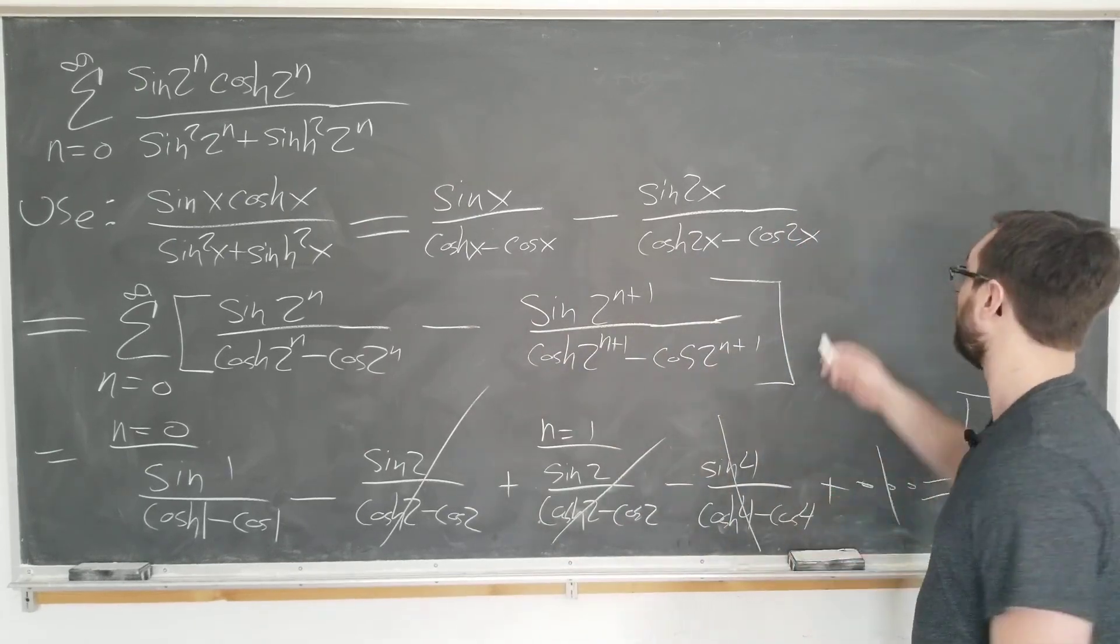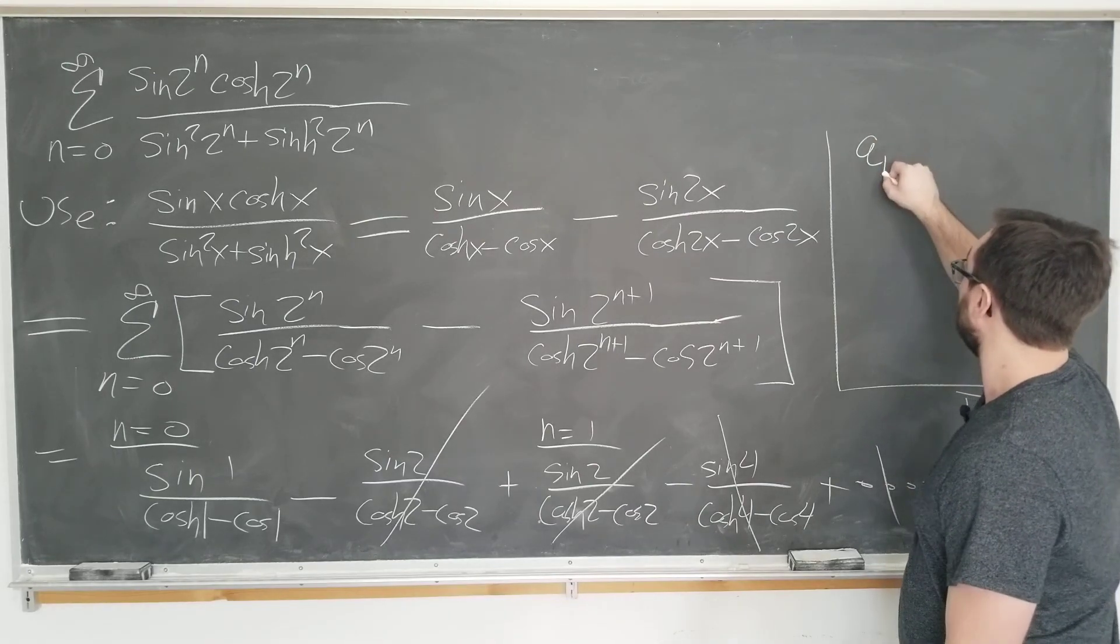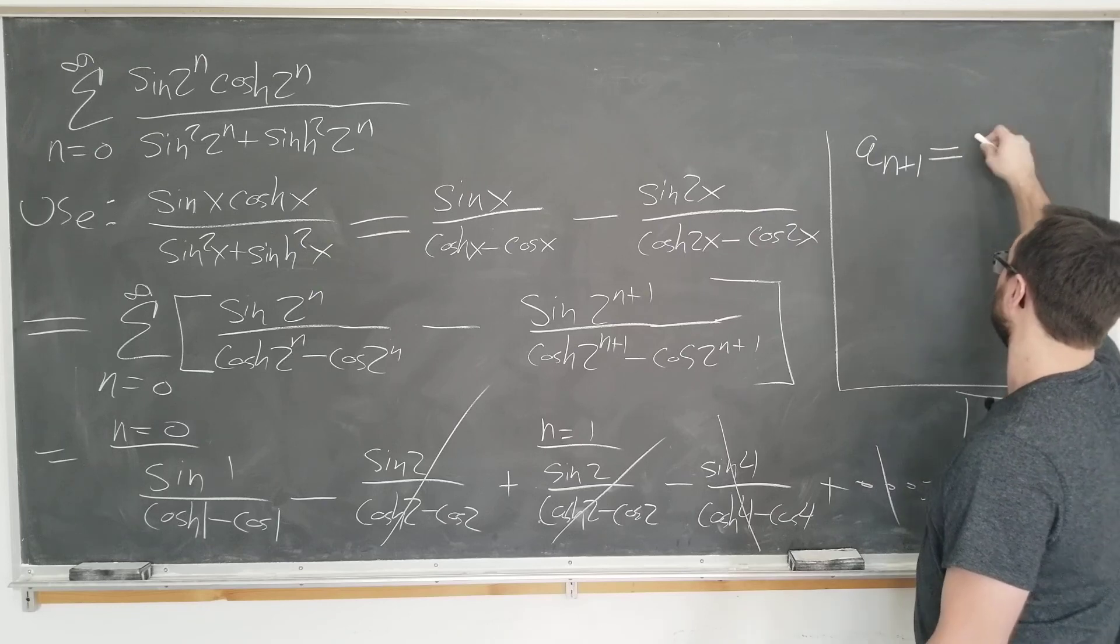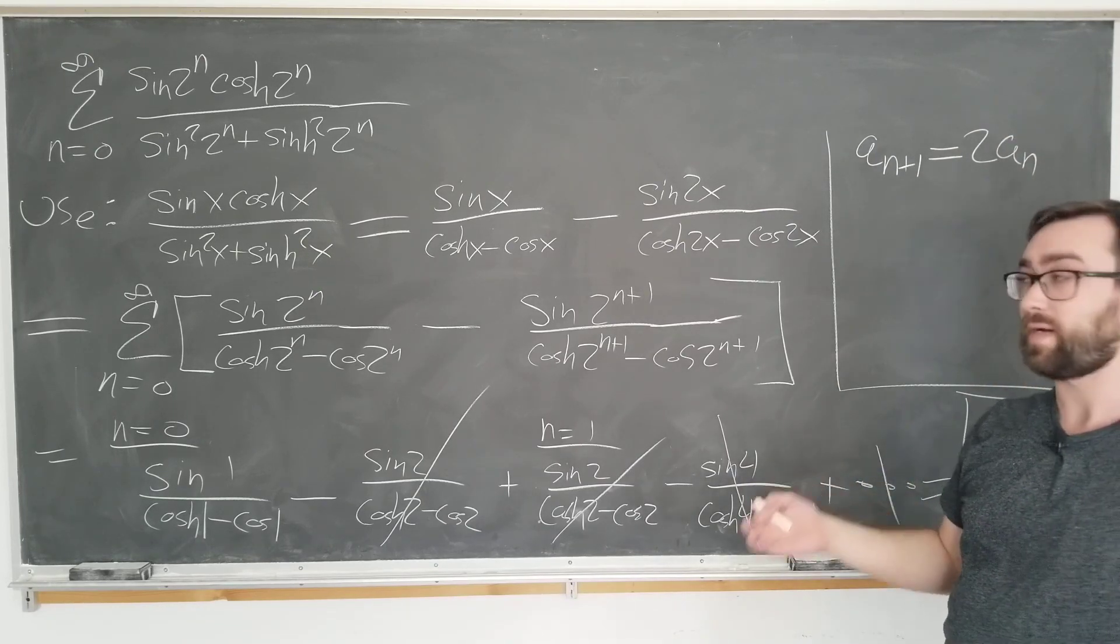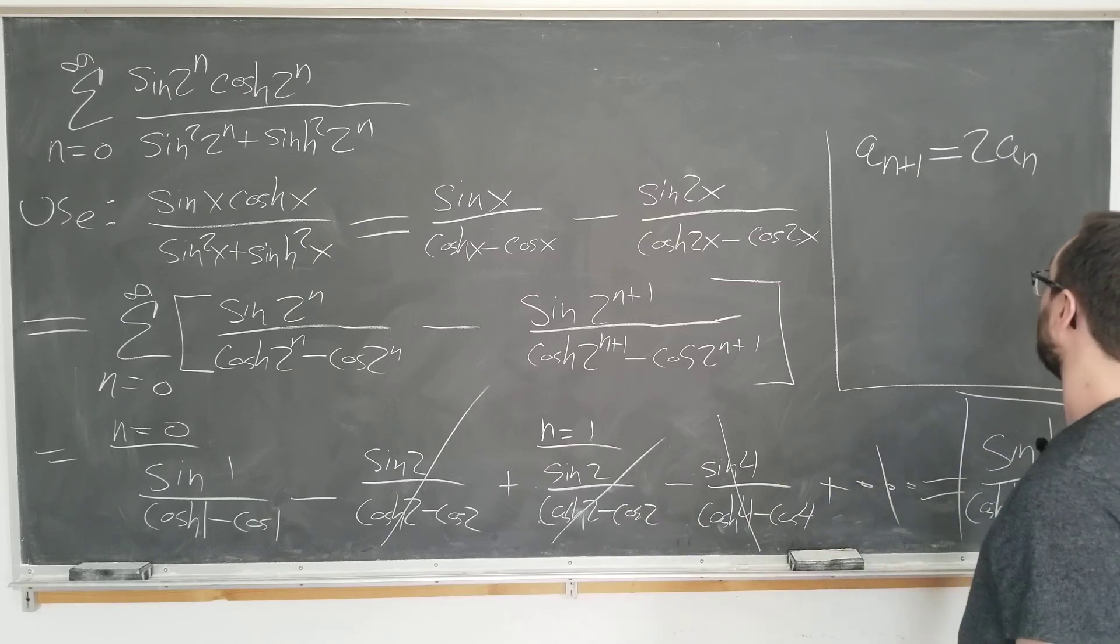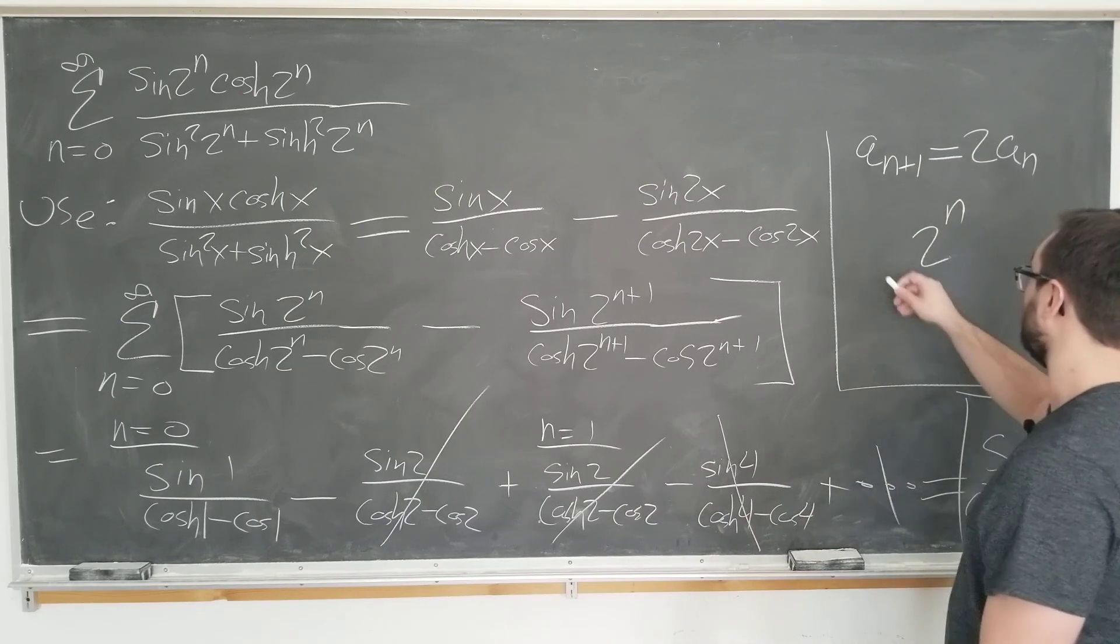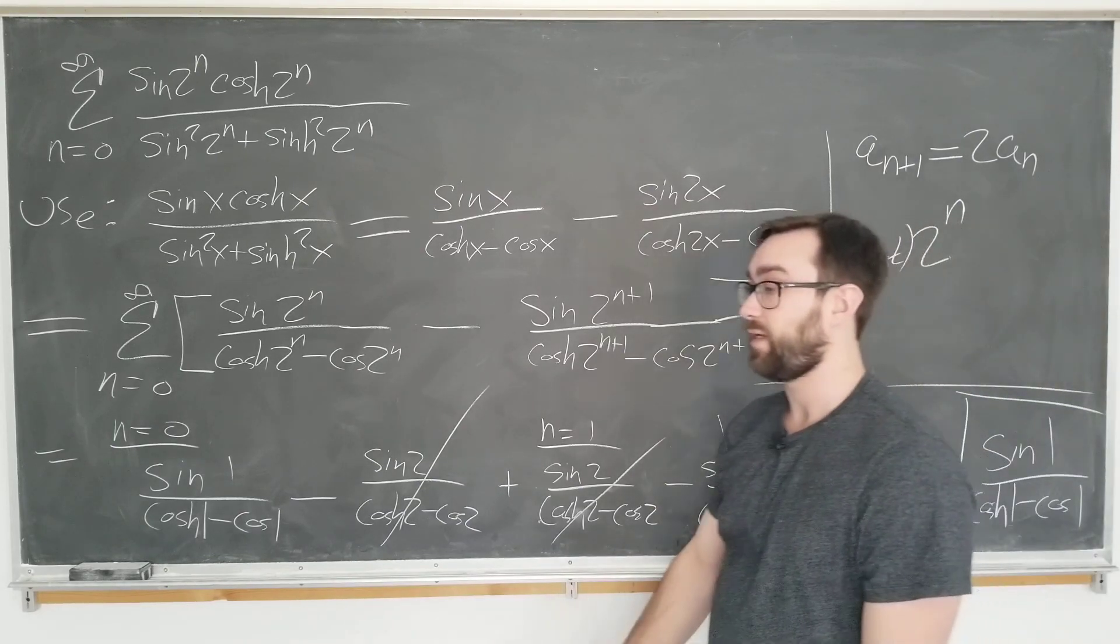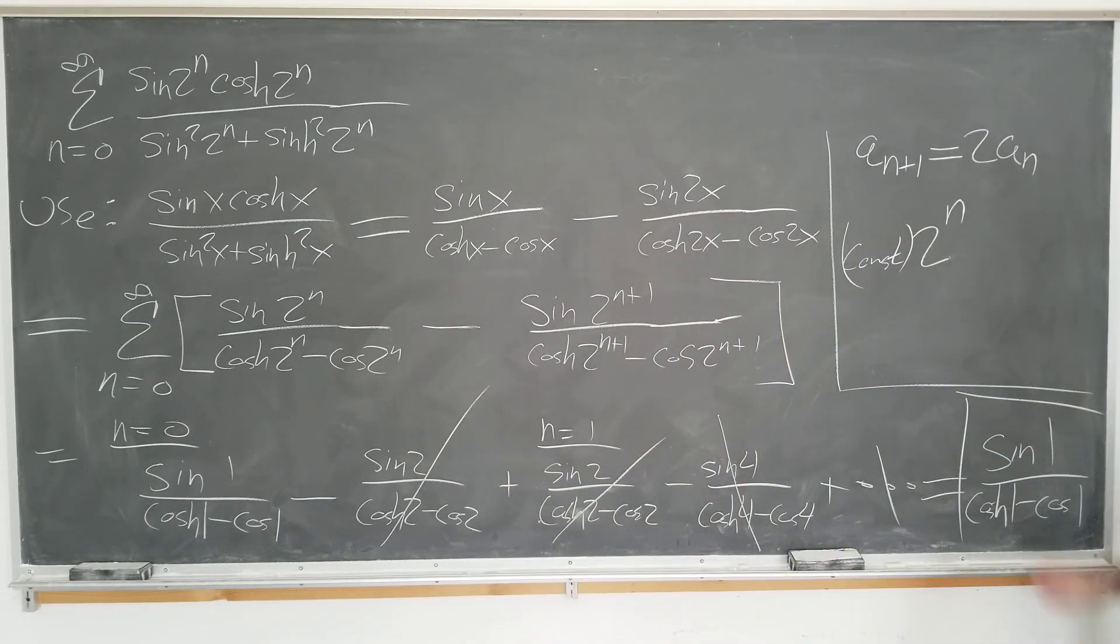So let's see why the 2 to the n sequence was important. Well, if we wanted to telescope like it did here, we would need a sequence satisfying a_n+1 is equal to 2a_n. That's the only way that this will work. Well, the only function that satisfies this is the exponential function up to a constant.